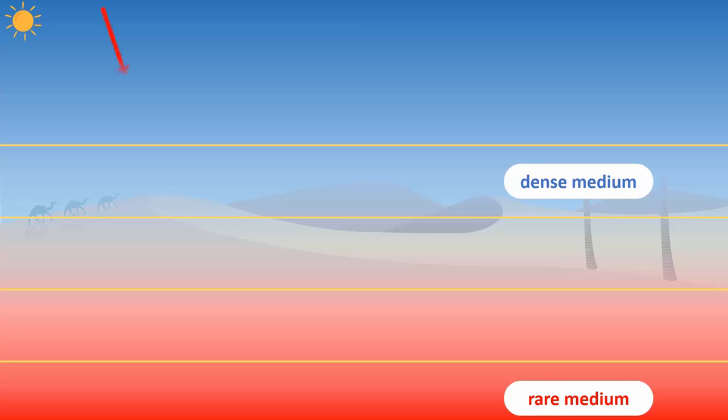Now, when light coming from sky travels from denser to rarer mediums of air, it bends more and more until it exceeds the critical angle. Beyond this angle, light reflects. This process is called total internal reflection.